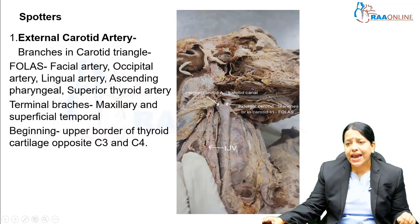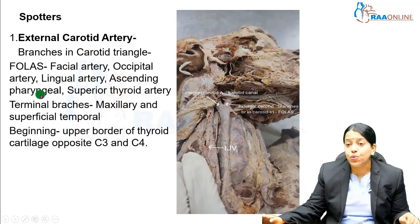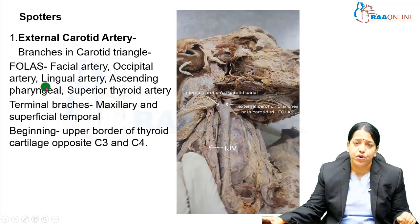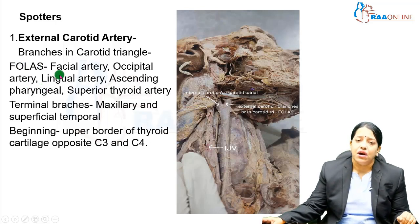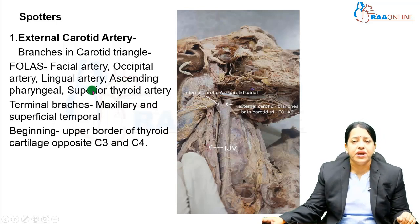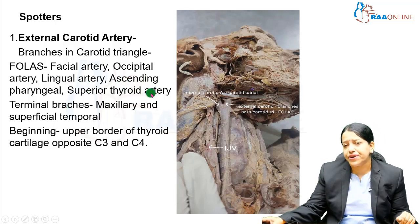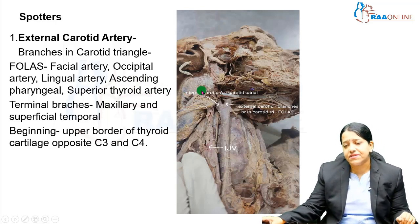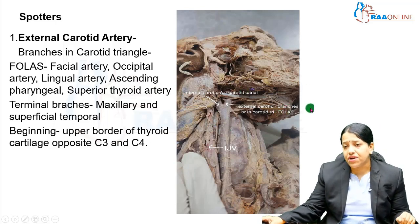These branches can be remembered using the mnemonic FOLOS: Facial artery, Occipital artery, Lingual artery, ascending pharyngeal artery, and Superior thyroid artery. These are the branches given off within the carotid triangle by the external carotid artery.